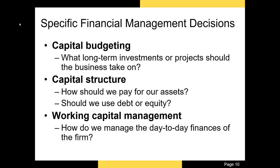First, financial managers must determine which capital budgeting projects would likely be profitable for a firm. They are also responsible for managing the firm's capital structure. Capital structure refers to the method the firm uses to raise cash for operations. Firms with too much debt relative to equity are more likely to default on that debt, but there are several advantages, like the reduction in a firm's tax liability, to being highly levered. Finally, most financial managers spend their days ensuring that the firm has enough cash on hand to pay suppliers and ensure they receive cash they are owed by customers in a timely fashion.